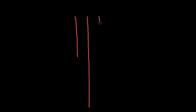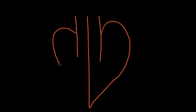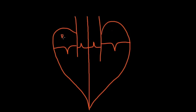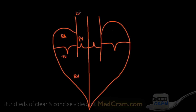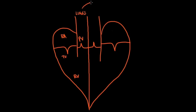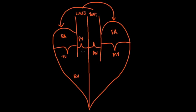First, I want to remind you of the anatomy of the heart for those of you who are new here. Blood from the right atrium goes through the tricuspid valve into the right ventricle, and then out through the pulmonic valve to the lungs. The lungs oxygenate it, and it goes to the left atrium, through the mitral valve, then through the aortic valve, and then out to the body, and back to the right atrium.